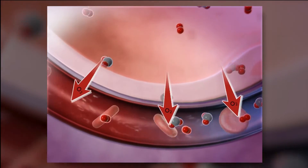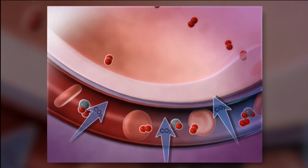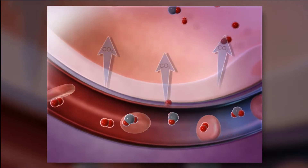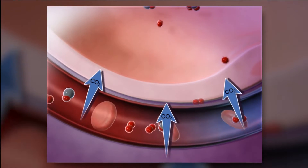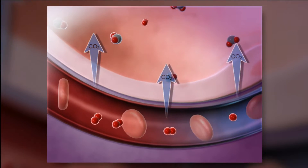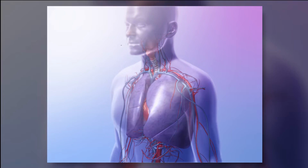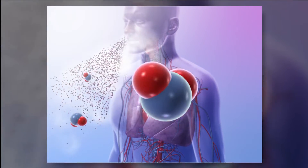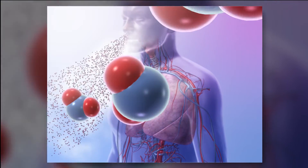At the same time, carbon dioxide in the blood diffuses in the opposite direction, moving from the blood in the capillaries to the alveoli. The carbon dioxide leaves the body when you exhale.